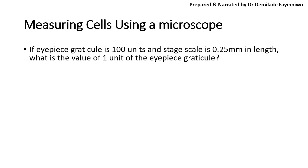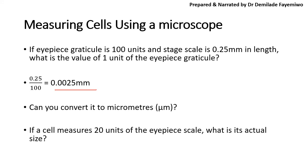All right. So let's try this. If the eyepiece graticule is 100 units and we have a stage scale that's 0.25 millimeters in length, and that stage scale basically covers the whole of the eyepiece graticule, then what is the value of one unit of the eyepiece graticule? So that would then be 0.25 millimeters divided by 100 units. So one unit would be this much. So it means if we had a cell that only covered one unit on the eyepiece graticule, it would be this long in terms of its length. If you want to convert that to micrometers, you can then simply multiply this by 1000, and that gives you the value in micrometers.